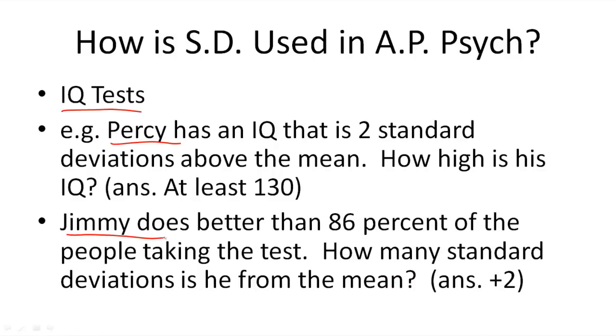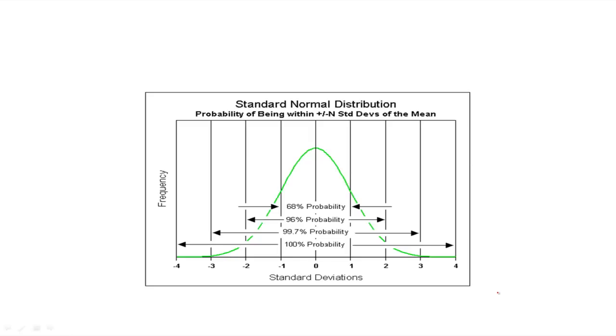Then, Jimmy does better than 86% of the people taking the test. How many standard deviations is he from the mean? Well, the answer is going to be plus 2, and here's why. Now when you look at this particular graph, you'll notice that within one standard deviation of the mean, you've got 68%. Then within two standard deviations of the mean, you've got 96%.